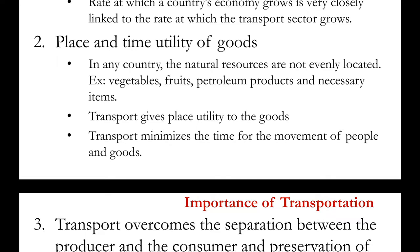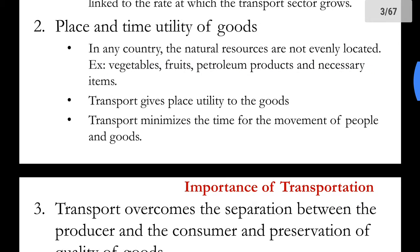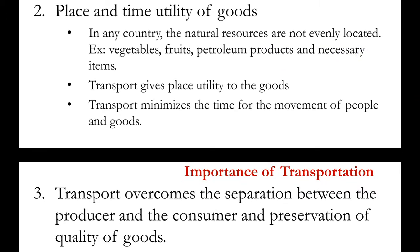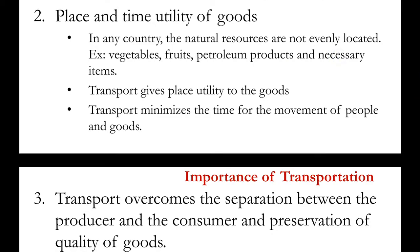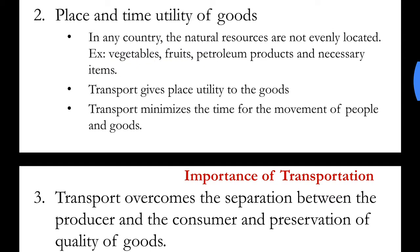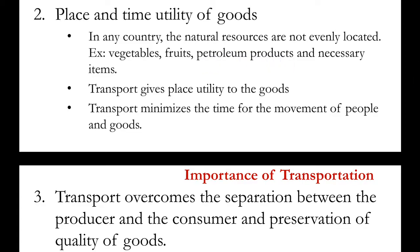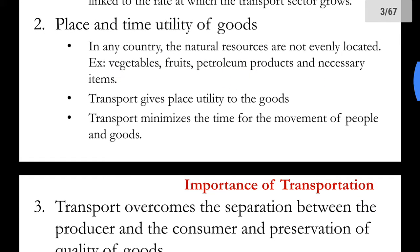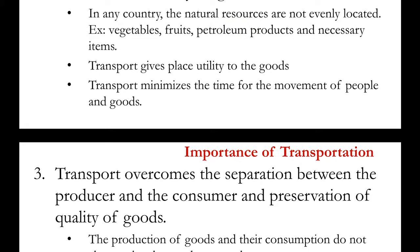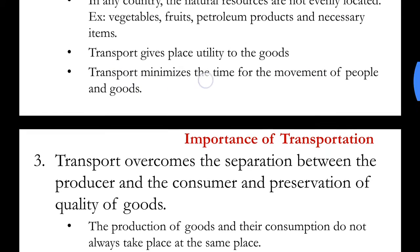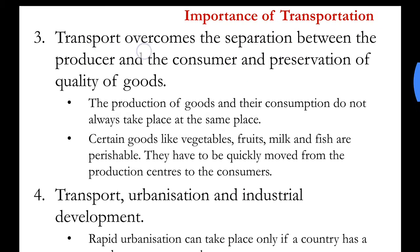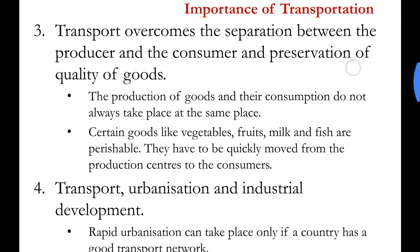The second point is place and time utility of goods. In any country, the natural resources are not evenly located. For example, vegetables, fruits, petroleum products and necessary items may not be equally distributed or produced across the country. There may be some areas with high vegetable production, high fruit production, or extraction of petroleum products. With the help of transportation, we can transport these materials to places where there is scarcity of these items. Transport gives place utility to the goods and minimizes the time for the movement of people and goods. Transport also overcomes the separation between the producer and the consumer and aids preservation of quality of goods.